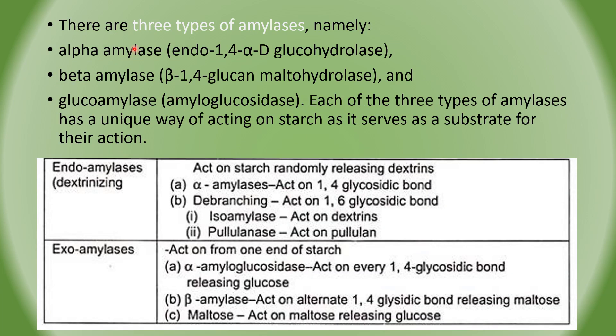There are three types of amylases: alpha amylase, beta amylase, and glucoamylase. These three different types of amylases have their own unique way of acting on starch, which serves as the substrate.